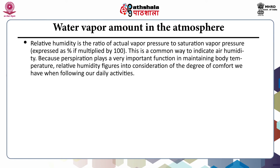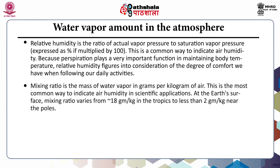We can also measure water vapor by relative humidity — the ratio of actual vapor pressure to saturation vapor pressure, expressed as a percentage. This is a common way to indicate air humidity because perspiration plays a very important function in maintaining body temperature, and relative humidity figures into considerations of the degree of comfort in daily activities. The third way is by the mixing ratio — the mass of water vapor in grams per kilogram of air. This is the most common way to indicate air humidity in scientific applications. At the earth's surface, mixing ratio varies from around 18 g/kg in the tropics to less than 2 g/kg near the poles.